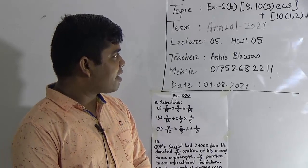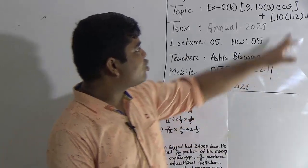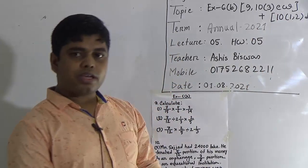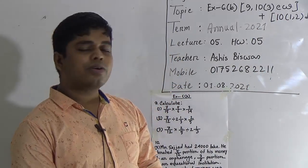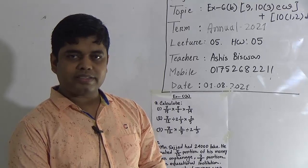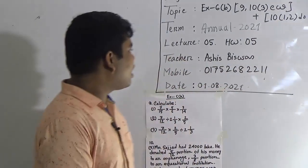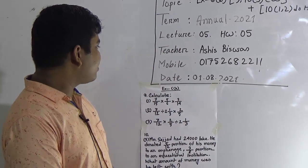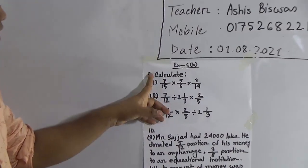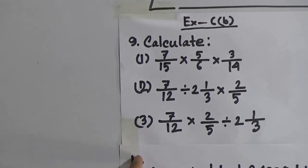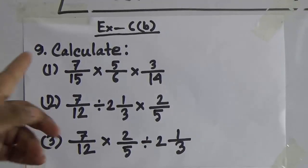My dear students, it is a matter of great joy that these two problems are already solved by yourself as your SW in the half-yearly exam, so it is easy for you to solve. Now we shall go to our class. Question number 9 says 'calculate' — that means simplification — and 3 problems are given. Question number 10, sub-number 3, has a word problem. We shall solve both.